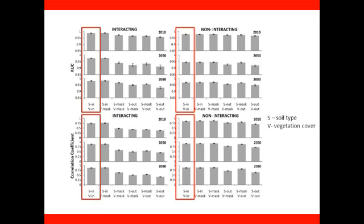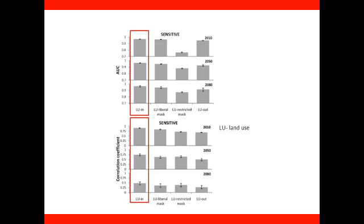We found that models where the static variables were included along with the dynamic variables performed better or at least no worse than either masking or excluding static variables. The difference in predictive ability was most pronounced when there is an interaction between a static variable, in this case soil type, and the dynamic variable precipitation. We also found that for variables such as land use, if such variables affect species distributions, including them in the model is better than excluding them, even though this may mean making the unrealistic assumption that the variable will not change in the future.